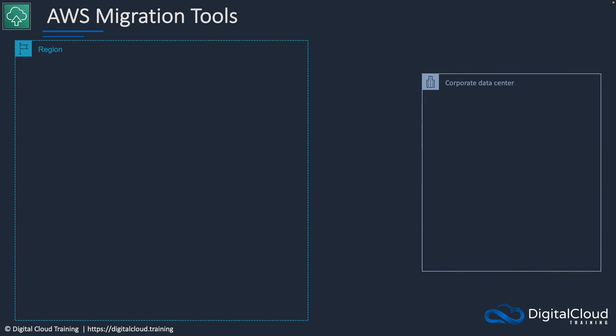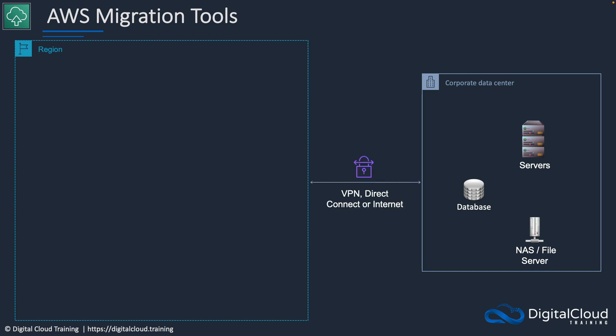Let's say we have some infrastructure in an on-premises data center and we want to migrate some of that data and applications into AWS. We might have servers, database systems, and NAS or file servers. Whenever you're using the migration tools, you'll generally need to connect a VPN at the very least or use Direct Connect, though you can in some cases use the internet as well. Direct Connect is often preferred, and you need to make sure the quantity of data will work within your timeframes — with Direct Connect you have more bandwidth, so you can migrate more quickly.